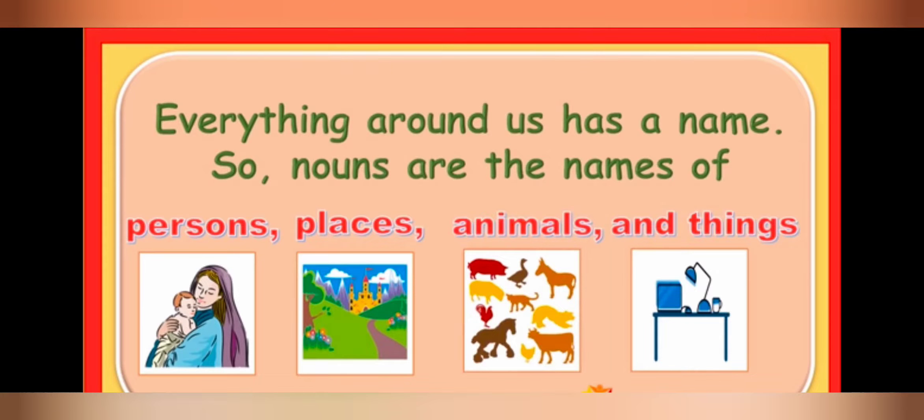Students, are you all able to see the pictures below? In persons, we have mother and a child. And in the places, we have a picture of a castle.